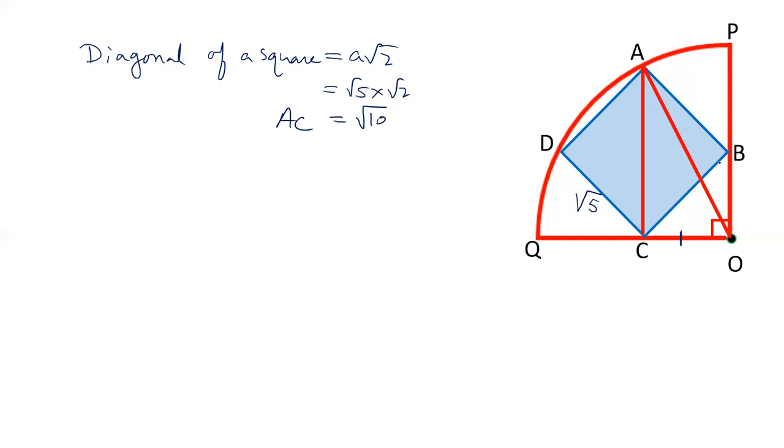Now this side OB is equal to OC. Two sides are equal, so two angles are equal. Angles opposite to equal sides are equal. ∠OCB equals ∠OBC. BC is given. Angle O is 90 degrees.